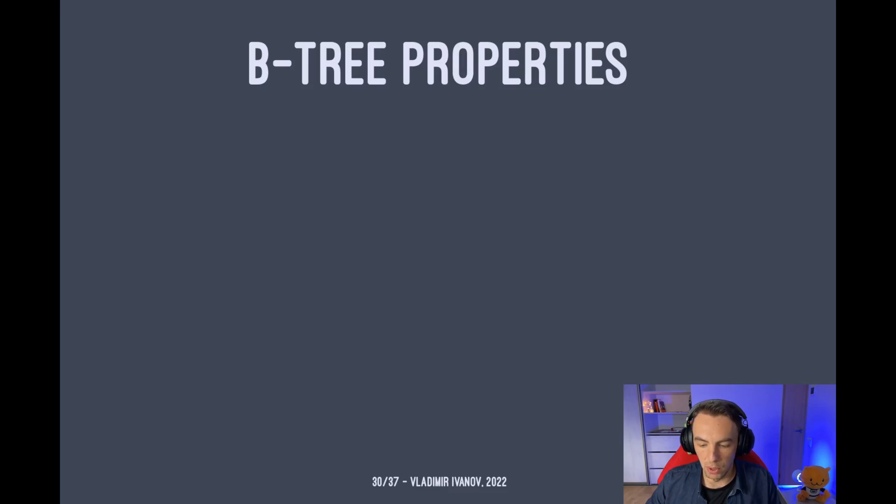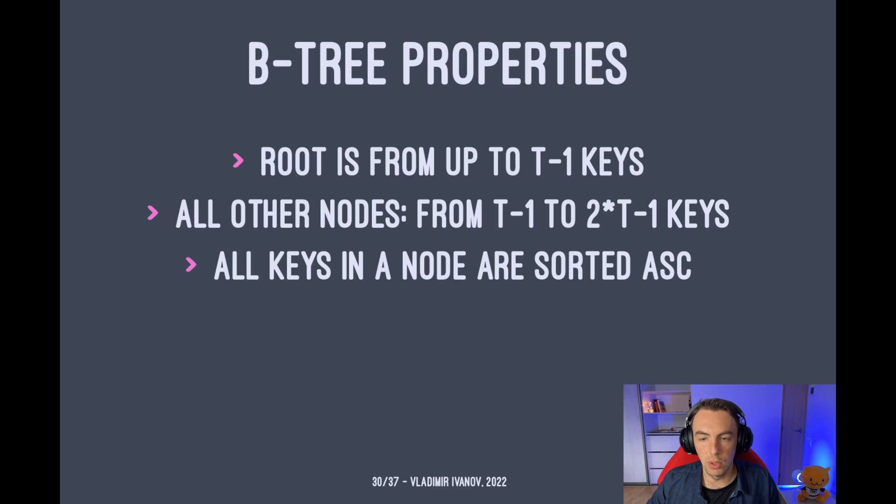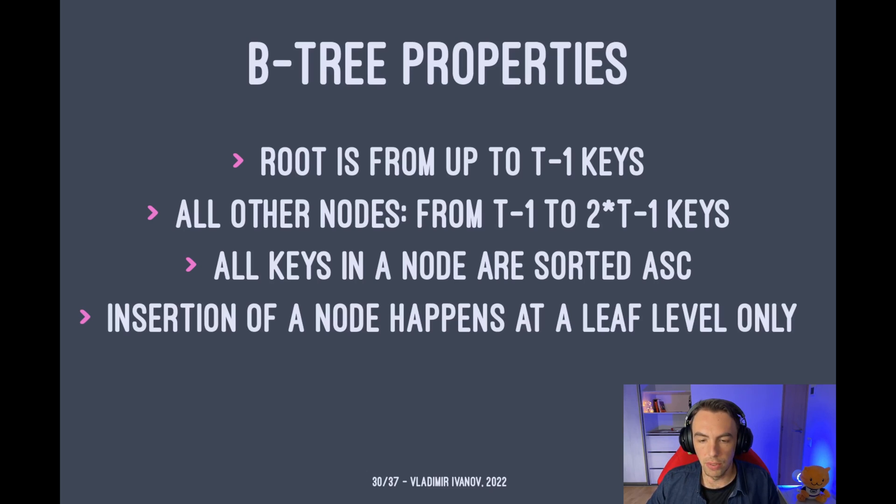B-tree properties are the following. First of all, the root node can hold up to T minus one keys. So the minimum amount is one, but the maximum is T minus one. All the other nodes except the root can hold from T minus one to two times T minus one keys. And all keys in a single node should be sorted for search efficiency and sorted ascending. Inserting of a node happens at a leaf level only.